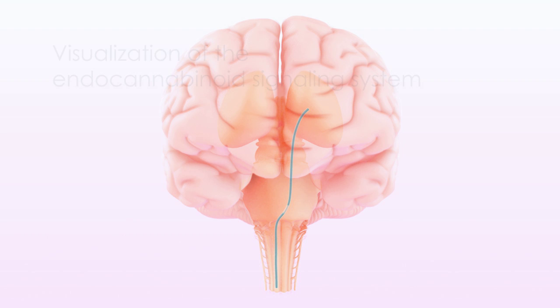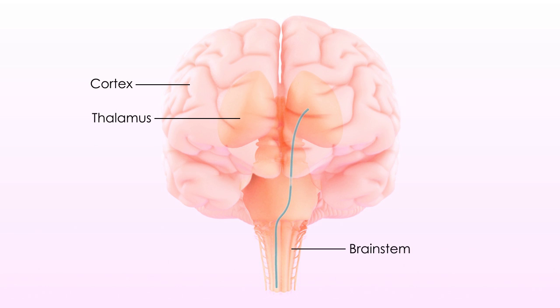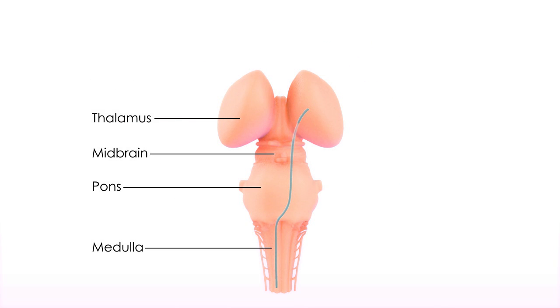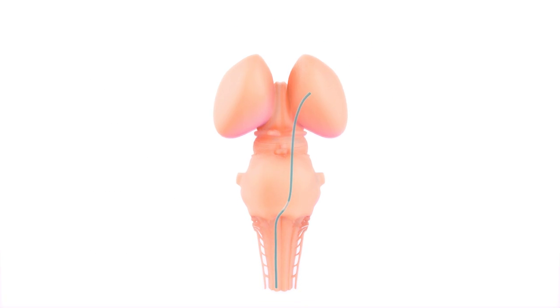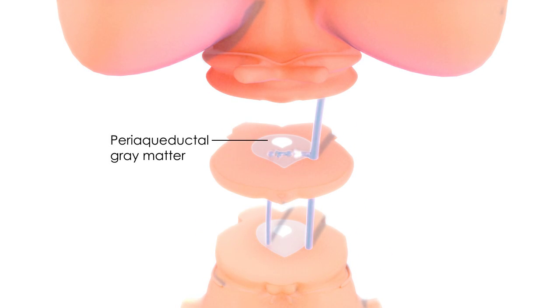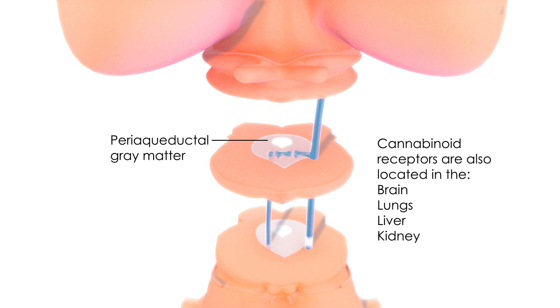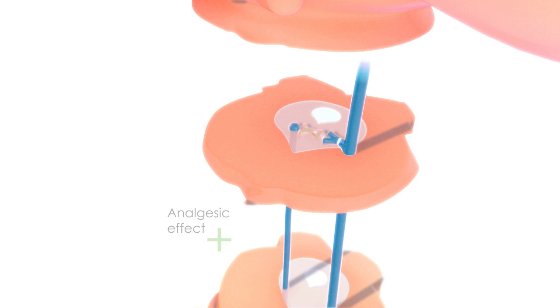In the normal transmission of pain, ascending nociceptive signals travel up the spinothalamic pathway to the thalamus, where they are processed and relayed to cortical and other areas. The ascending pathway also relates to the periaqueductal gray matter, an important part of the descending pain modulating system where specific cannabinoid receptors are located. Stimulation of the periaqueductal gray is known to produce an analgesic effect.